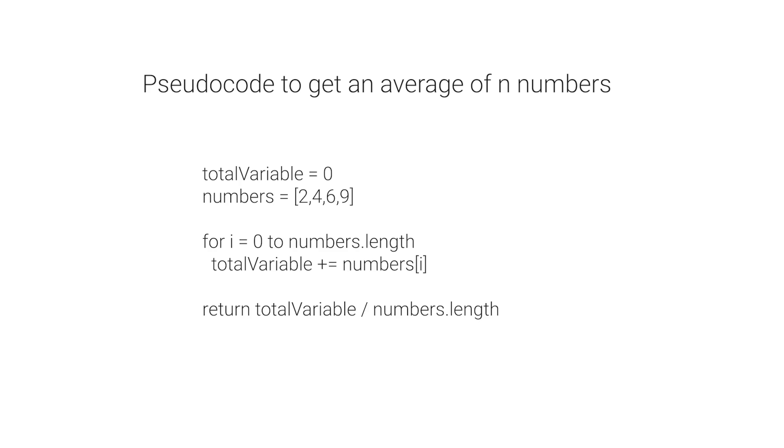As you actually get into writing the code, you'll have to implement different methods or functions, and even with a small function it's helpful to sketch out what logic you want it to do. We call that pseudocode — basically writing out in plain English how you want this method or function to work. Planning these things out is very important.